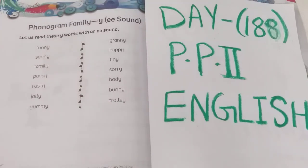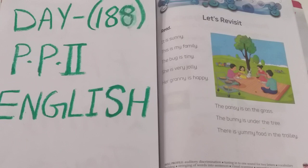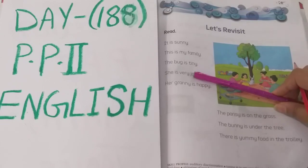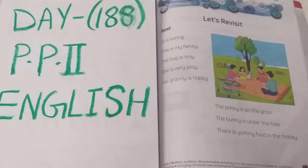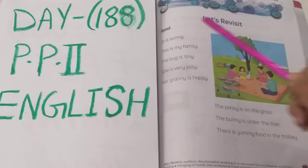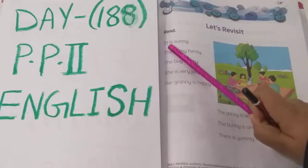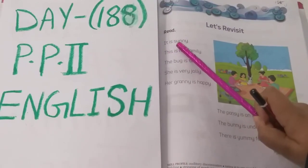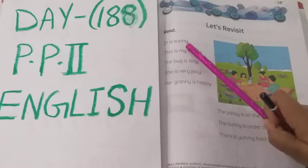Okay children, now we have an activity. Here you can see some sentences are written. In each sentence, we need to find the letter Y. If we are pronouncing the sound of Y as E, we need to underline that word. Okay, let's start. I-T, it. I-S, is. S-U-N-N-Y, sunny.